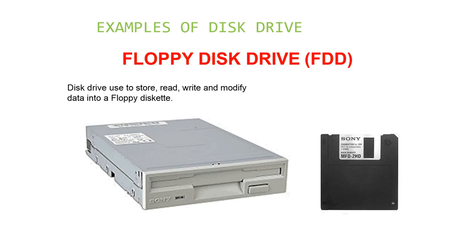A floppy disk drive is also an example of a disk drive. A floppy disk or floppy diskette is a type of disk storage composed of a thin and flexible magnetic storage medium in a square plastic enclosure lined with fabric that removes dust particles from the spinning disk. Many modern computers no longer include a floppy disk drive because we now work with much larger files.